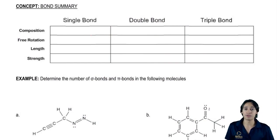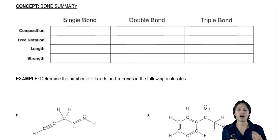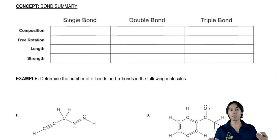So basically we have three types of bonds: single, double, and triple. What we need to know is just a few facts about each. The first thing is composition. Composition deals with are they made out of sigma bonds, pi bonds, or a combination.